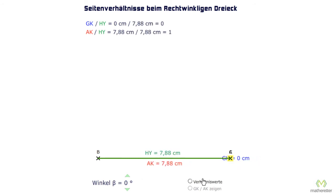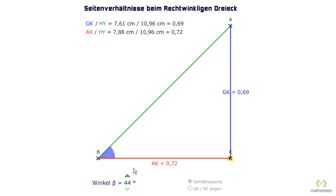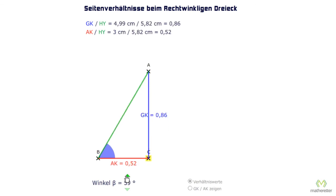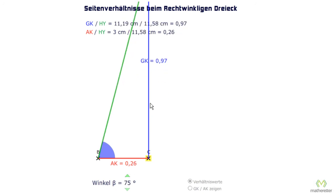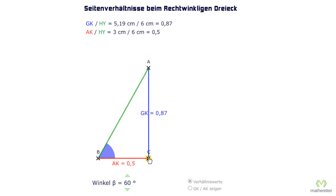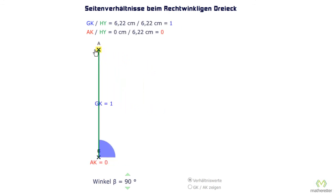If we now open our triangle and look at the ratios, we see that the adjacent decreases in length relative to the hypotenuse. The larger the angle becomes — the closer it gets to 90 degrees — the bigger the opposite gets and the smaller the adjacent is in proportion. At 60 degrees, the opposite is 0.87 times as long as the hypotenuse and the adjacent is 0.5 times as long as the hypotenuse. If we go to 90 degrees, the opposite gets bigger and bigger until it equals 1 — the same size as the hypotenuse — and the adjacent is 0, so 0 times as large as the hypotenuse.